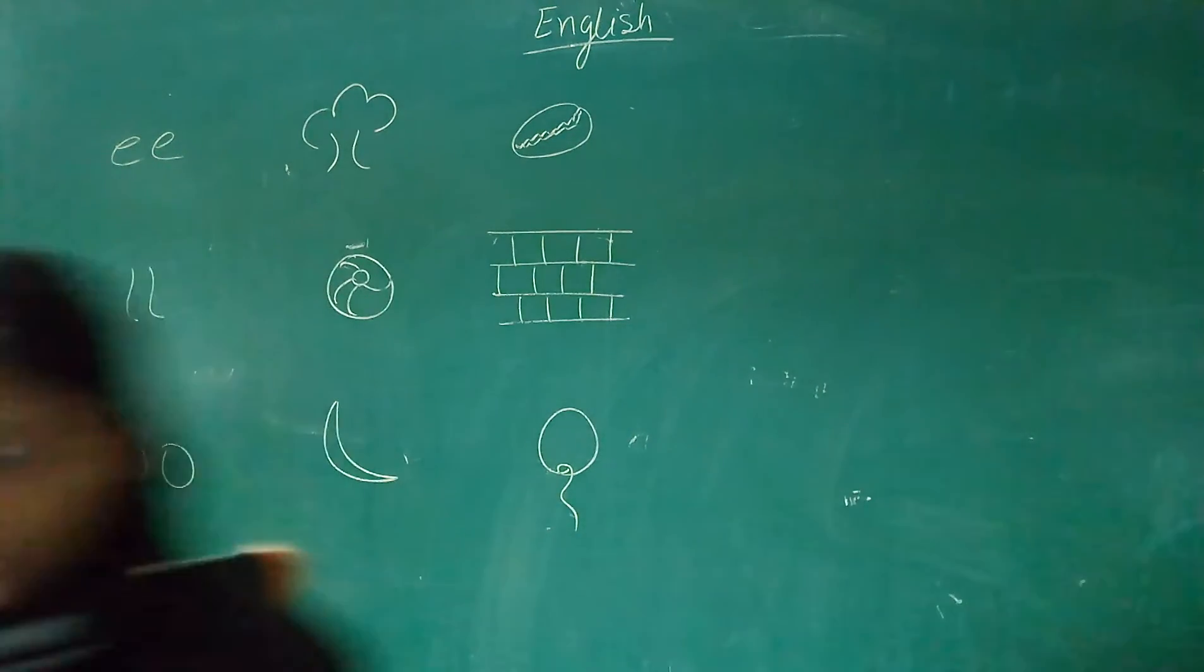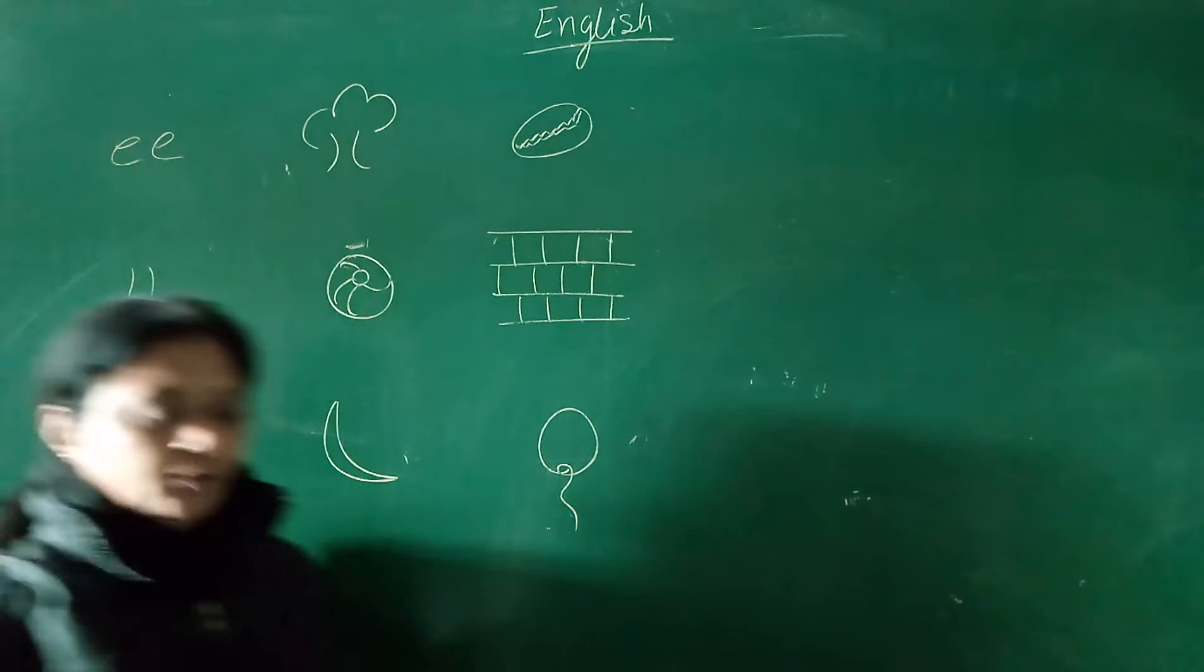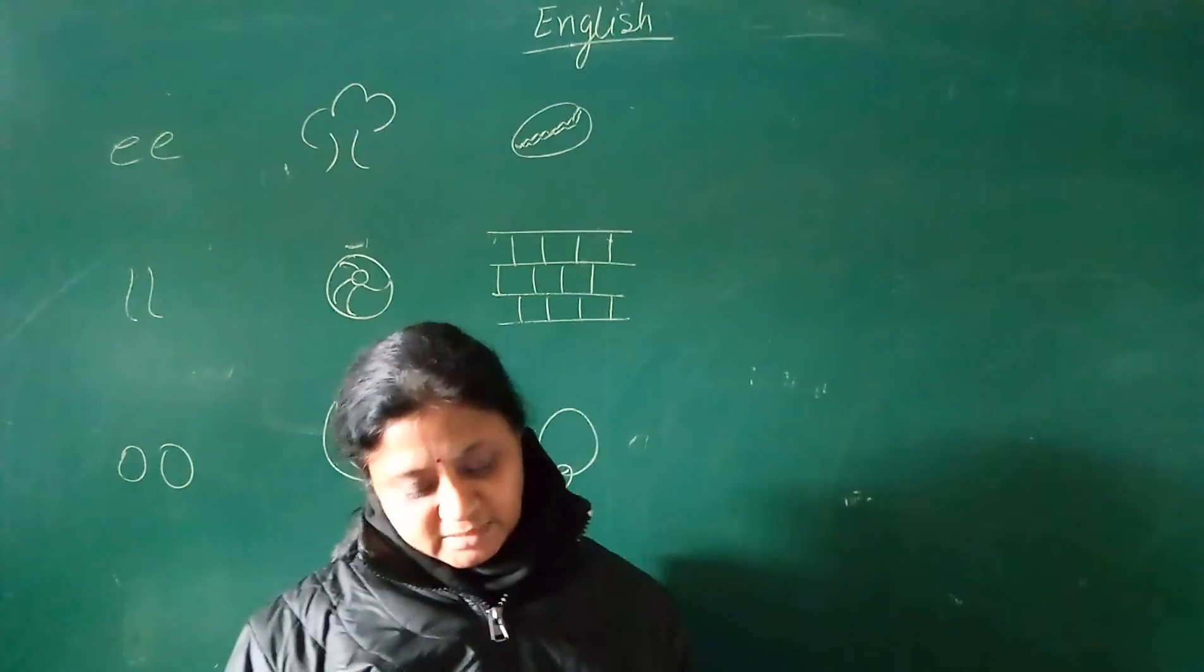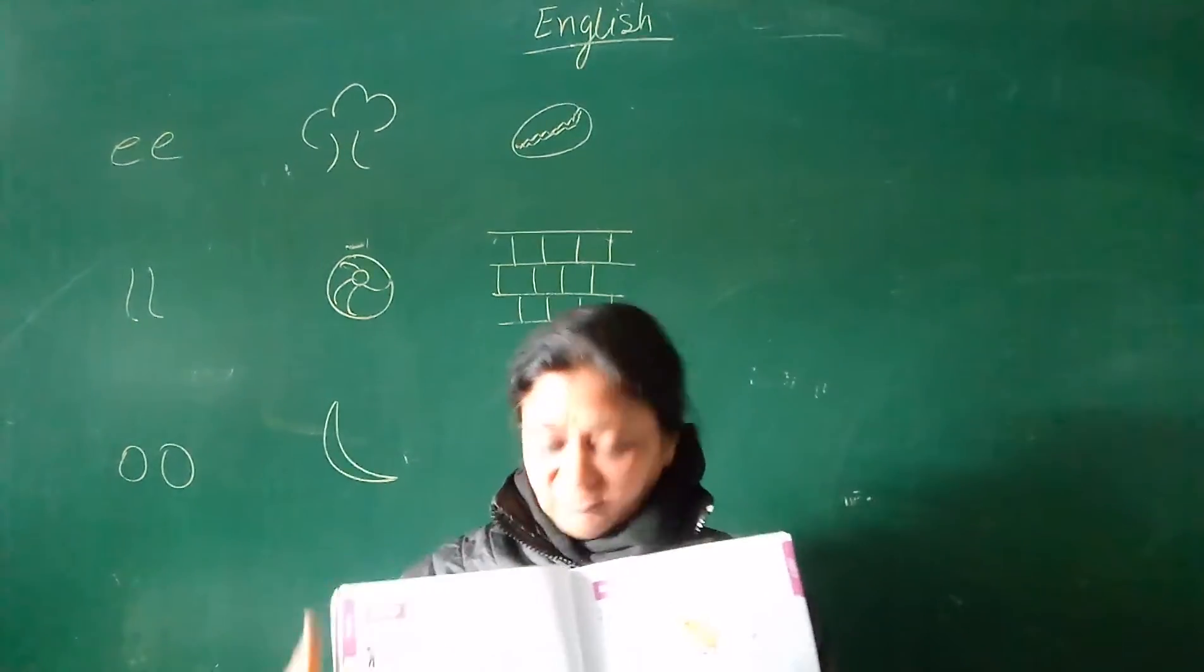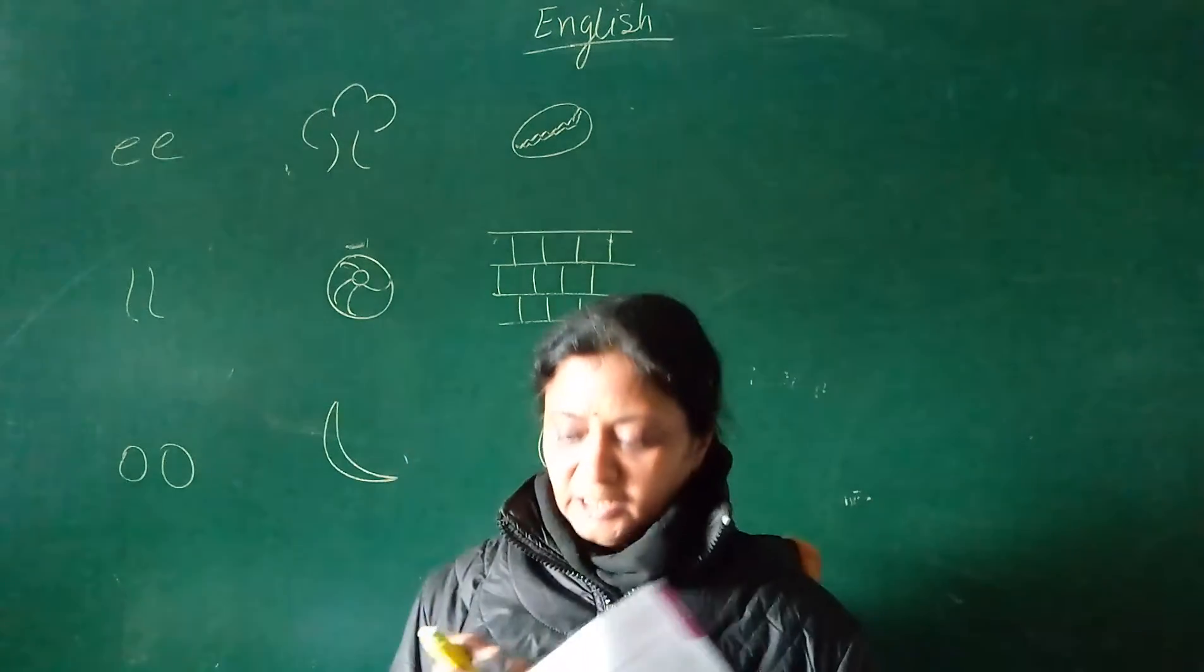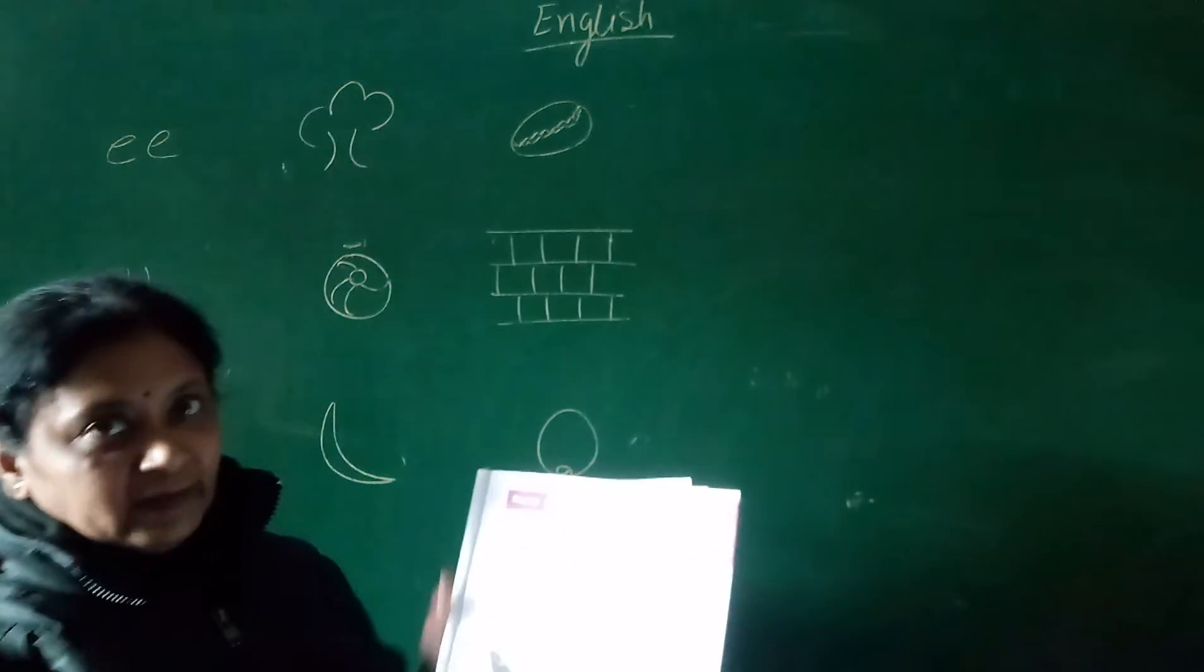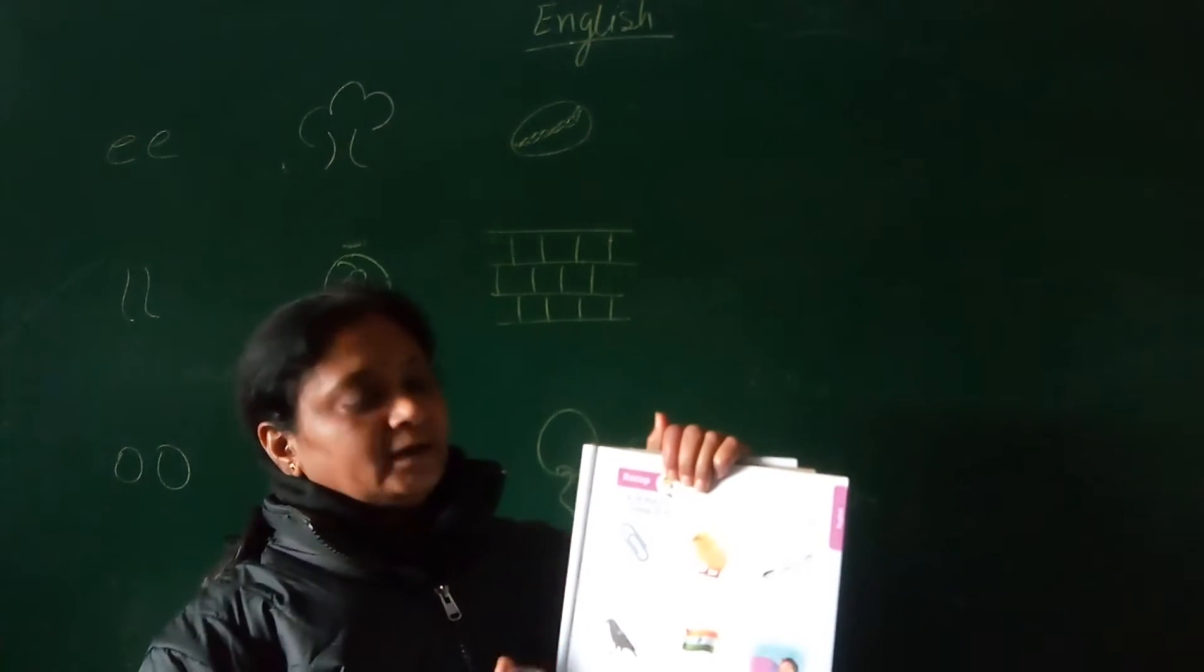Good morning everyone. So today in English we are going to start Book 7. You have some exercises in which you have to write the cluster words of these clusters. Each cluster has three words you have to write in it. And here are some pictures given for the blanks, so you have to identify the picture and write the correct name of that picture.